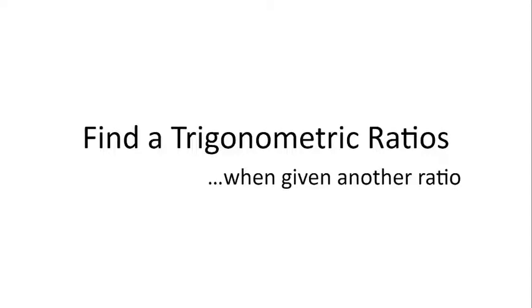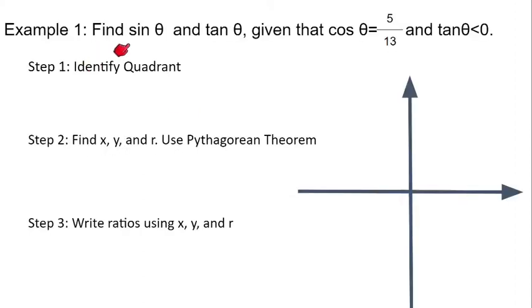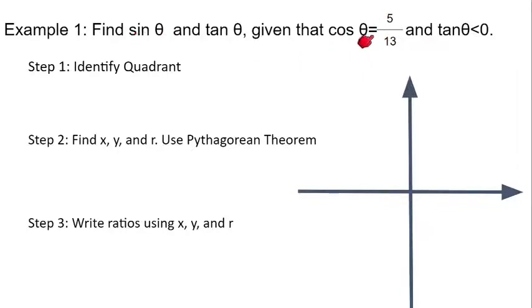In this video, we're going to look at how to find trigonometric ratios when given another ratio. Problems like this: find sine theta and tan theta given that cosine theta is some ratio. So we're finding trig ratios given another ratio.